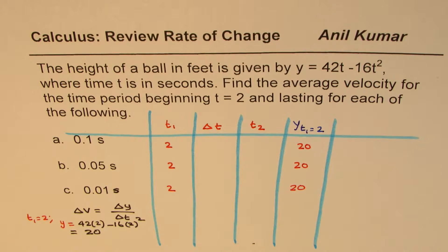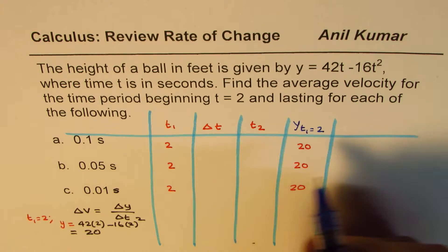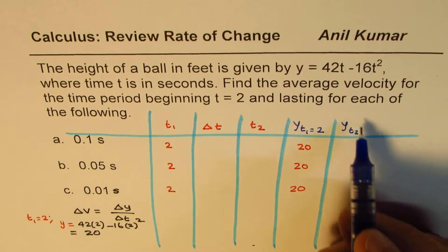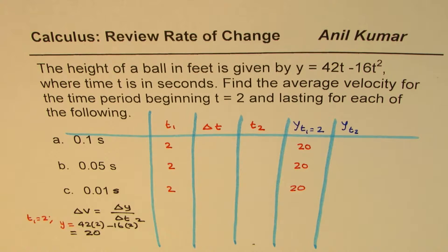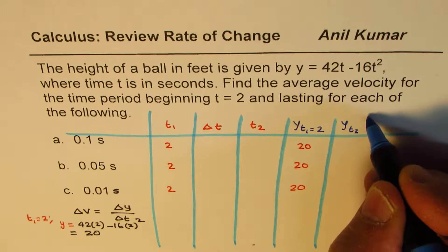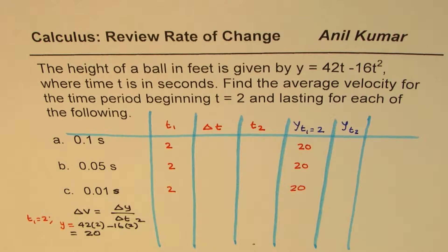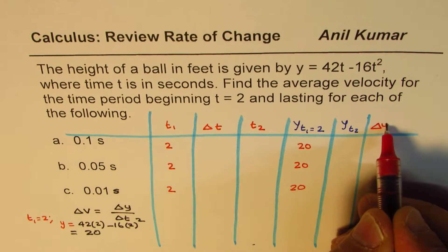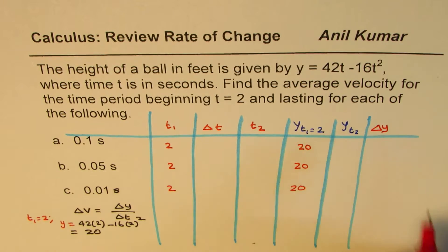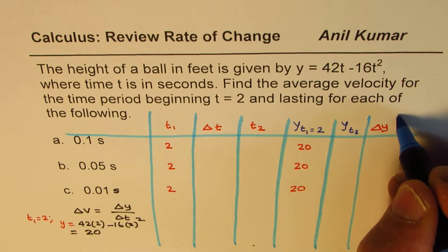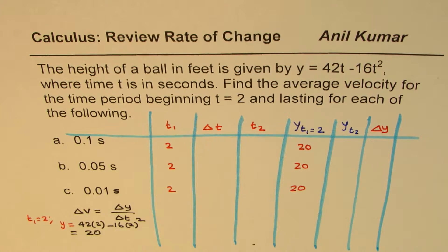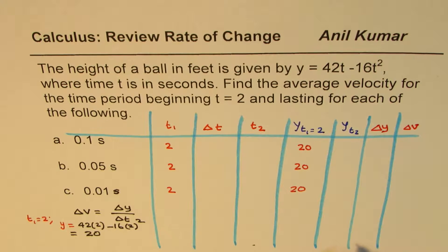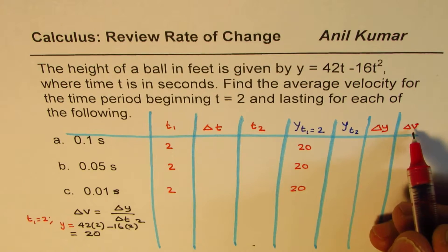Now what we need to find is the distance at t2, after each time interval. Once we have that figure, the difference between distance at t2 and distance at t1 gives us change in distance, which is delta y. Once we have delta y and delta t, we can calculate the average velocity — that is, change in distance over change in time.